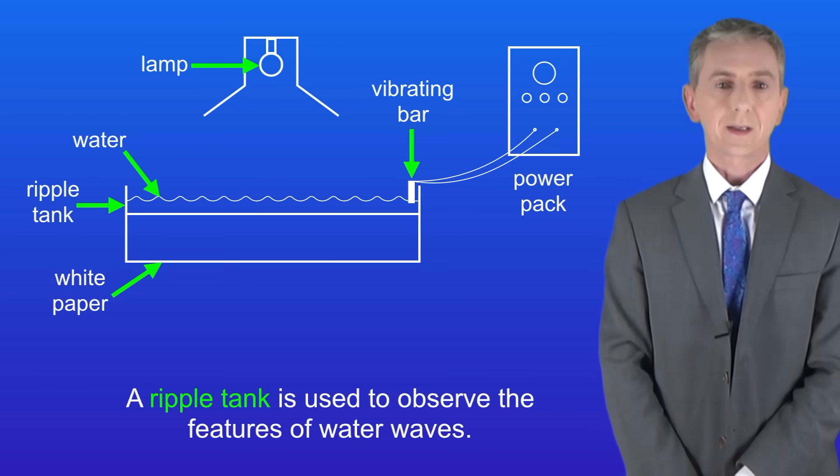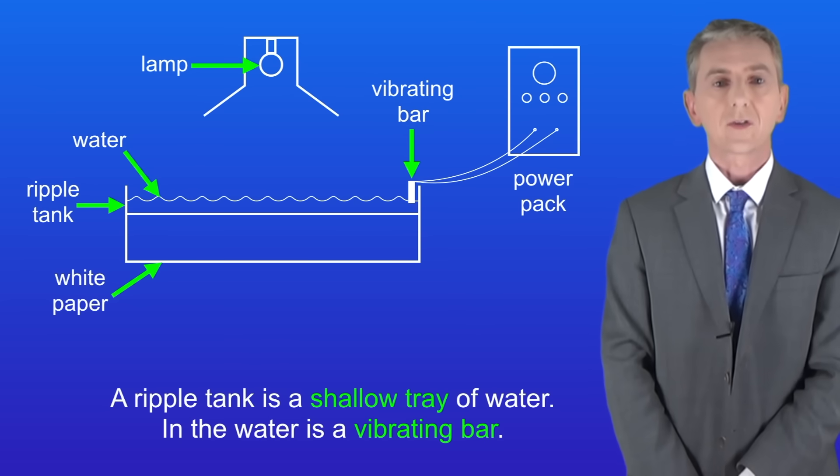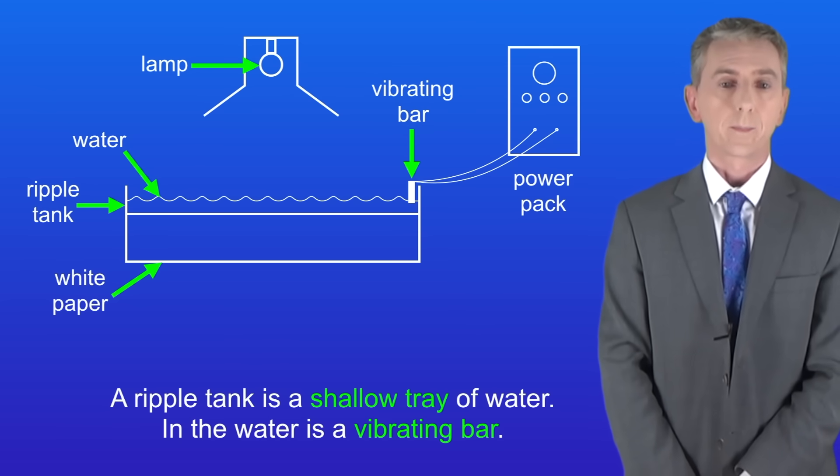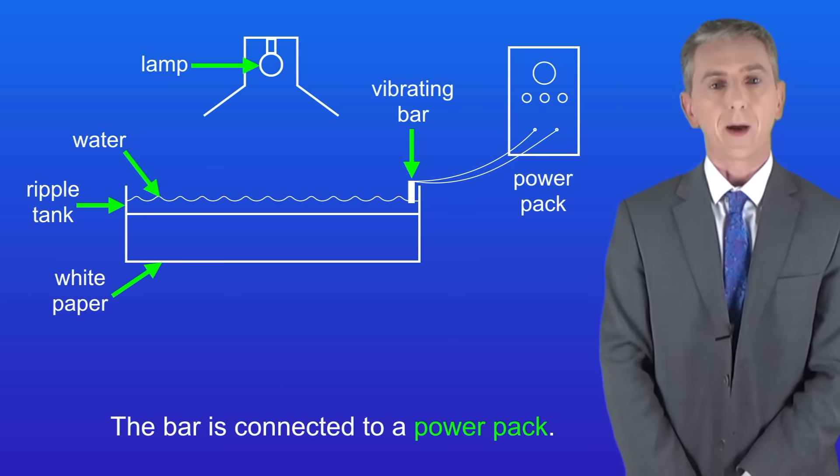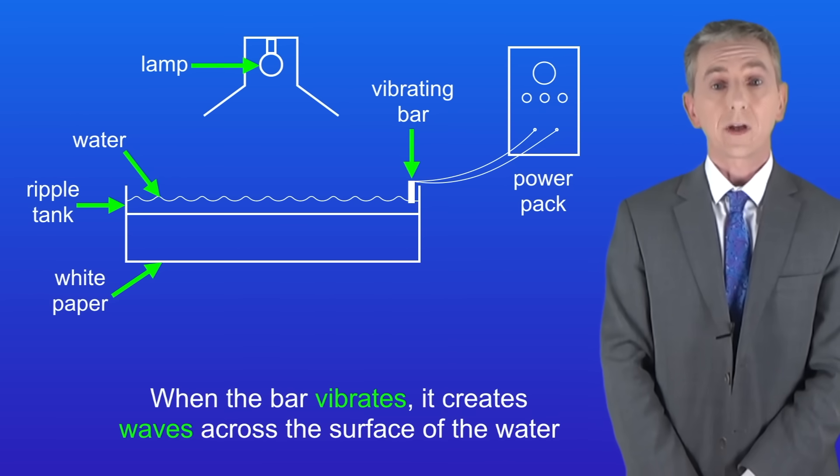A ripple tank is used to observe the features of water waves. A ripple tank is a shallow tray of water and in the water is a vibrating bar. The bar is connected to a power pack. When the bar vibrates it creates waves across the surface of the water.